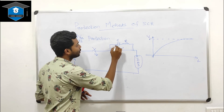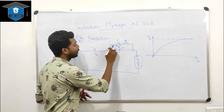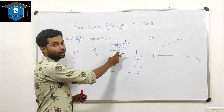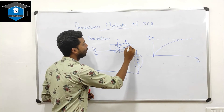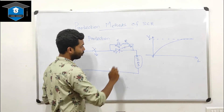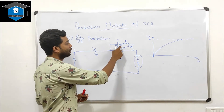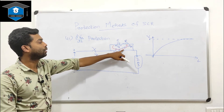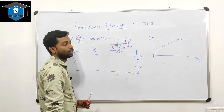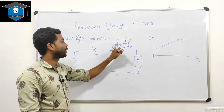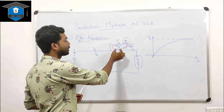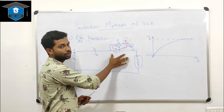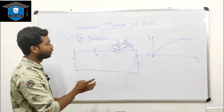The capacitor builds up charge at a slow rate, meaning it does not allow a sudden change in voltage. The capacitor finally charges with positive polarity on one side and negative on the other. When the SCR is forward biased and a gate voltage is applied, the SCR turns on. To limit the discharge current of the capacitor, a resistor is connected in series with it in the snubber circuit.